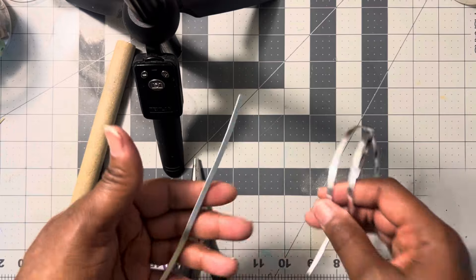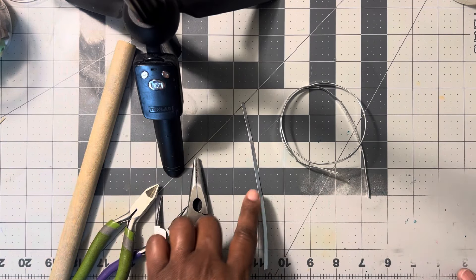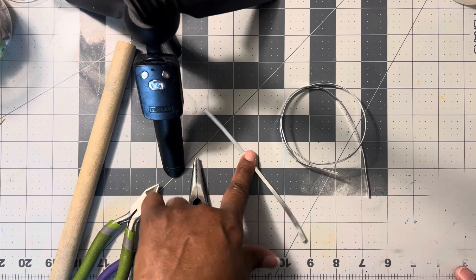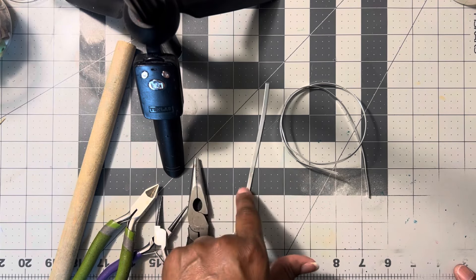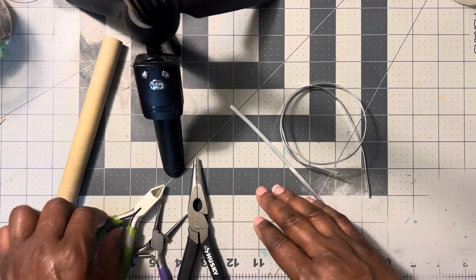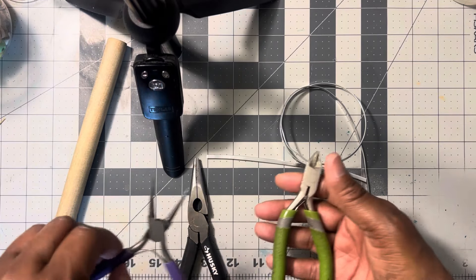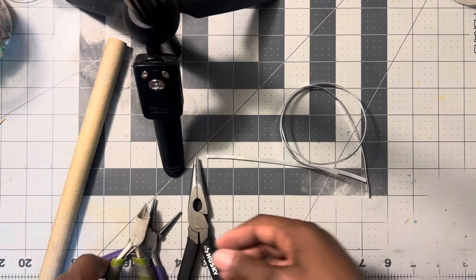So I'm going to be doing the ring in silver. And I've cut out my piece. This piece is six inches long. So six inches. You're going to need your round nose pliers, your round nose wire cutters, and a dowel.